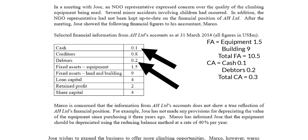A common mistake students make is confusing creditors and debtors. Creditors is when you've requested a trade credit and still have to make that payment. Debtors is when others owe you payment — so debtors are a current asset because the money will be converted into cash. Creditors, being a financial obligation, are a current liability, because the supplier will expect payment pretty quickly once you've received goods or resources.